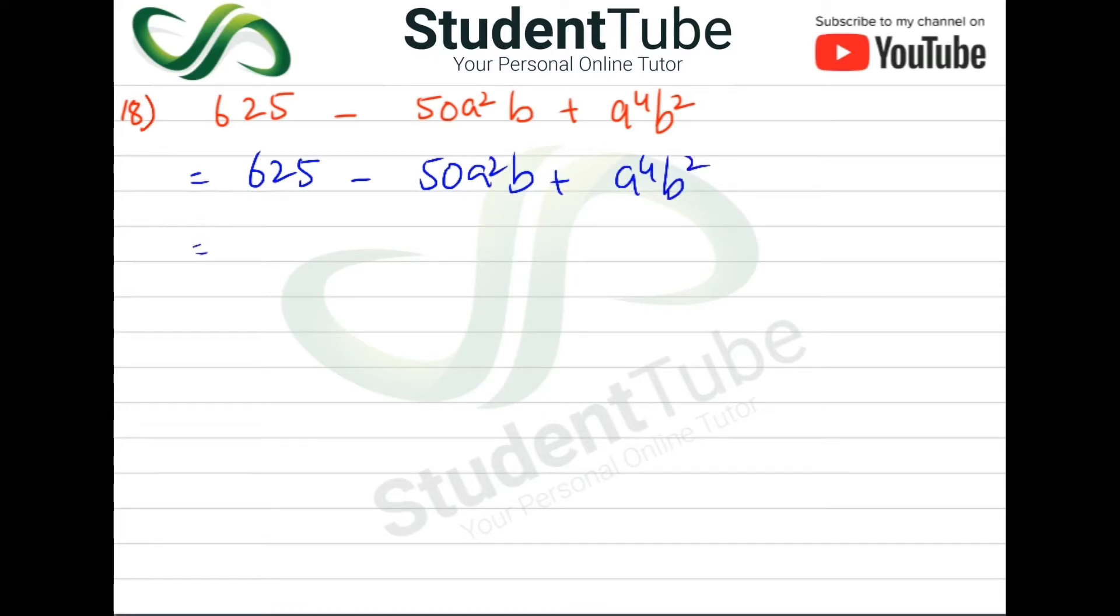So here 625, if we expand here, what will happen? 25 squared. 25 when we do 2 times, it becomes 625. After this minus 50, we will break 50. Here will be 2 and then 25. 25 multiply by 2, then it becomes 50 and here will be A²B.